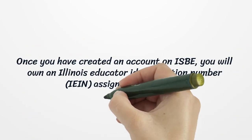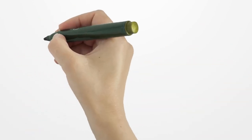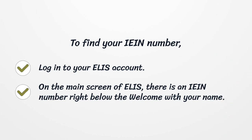Once you have created an account on ELIS, you will be assigned an Illinois Educator Identification Number. To find your AIN number, log in to your ELIS account — on the main screen, the AIN number appears right below the welcome message with your name.